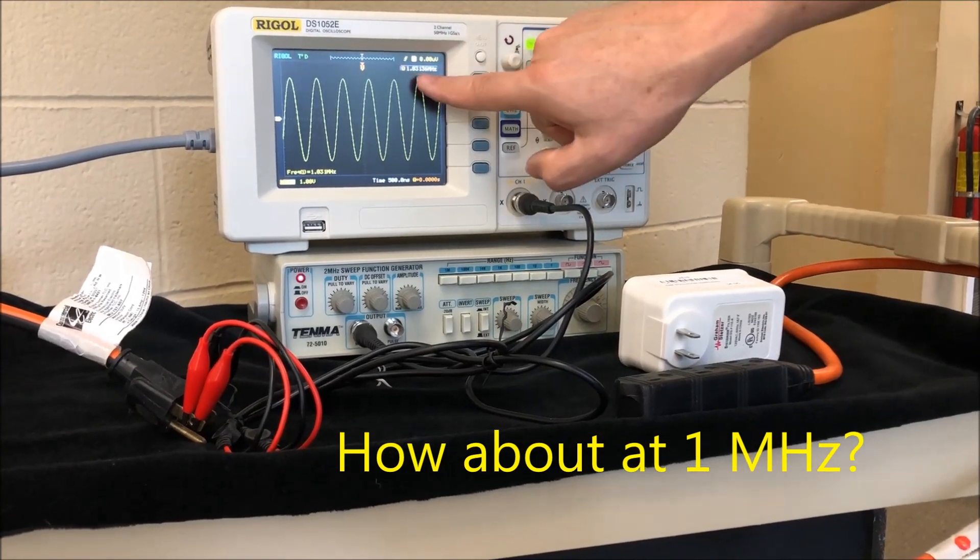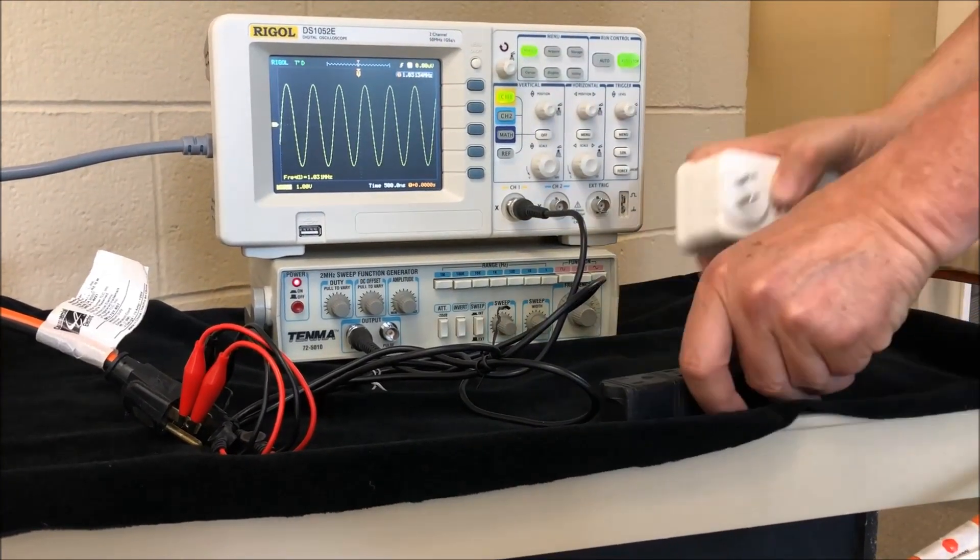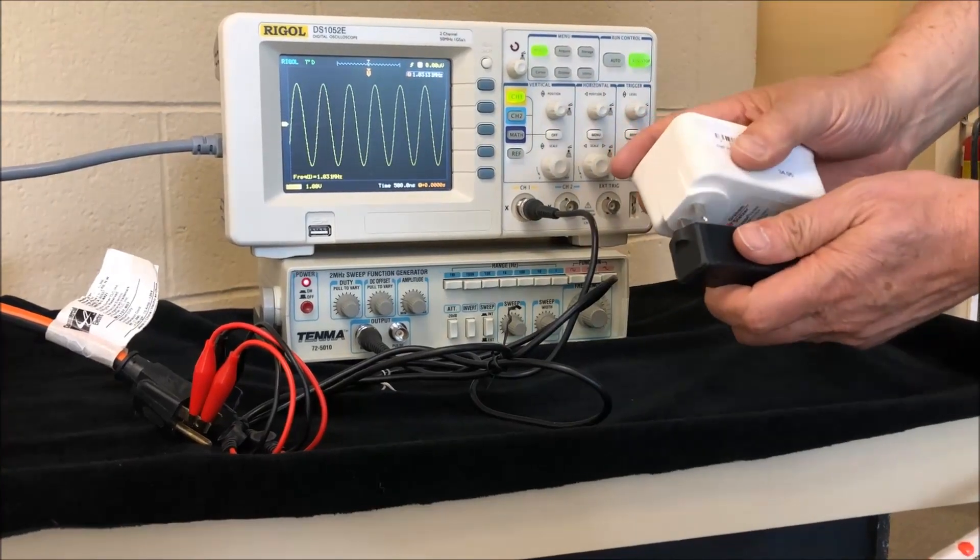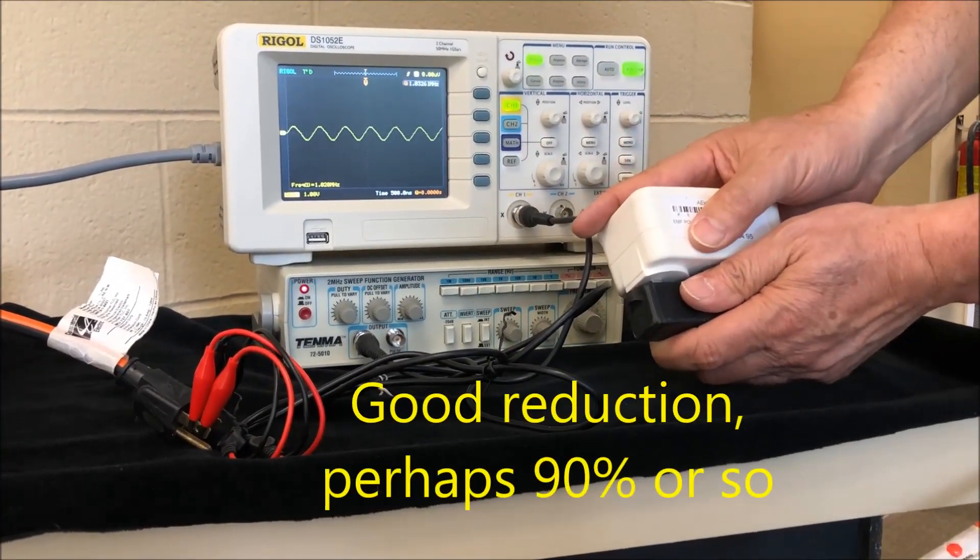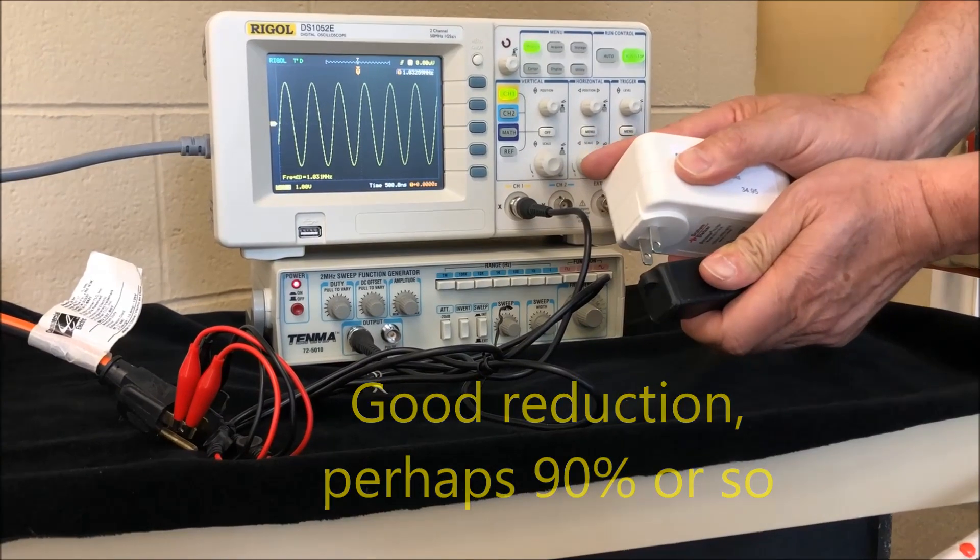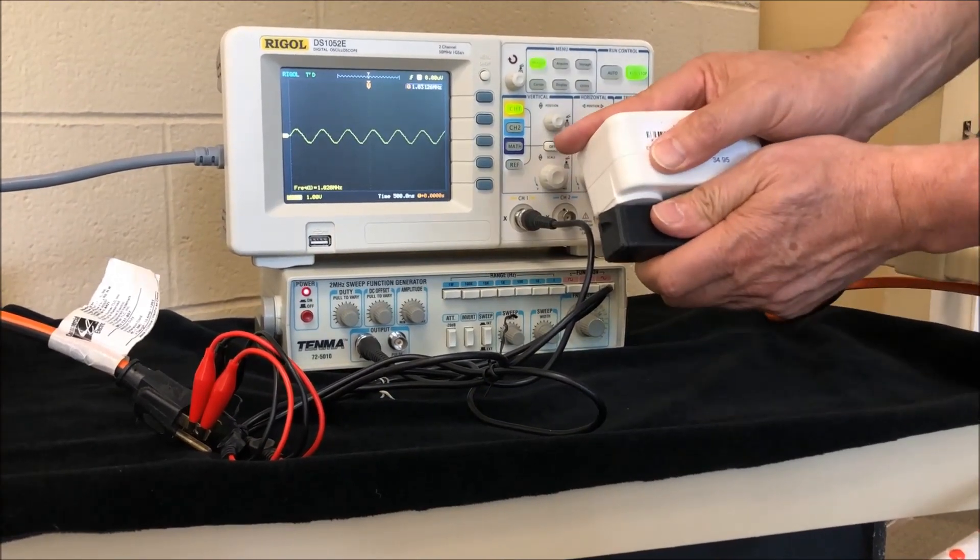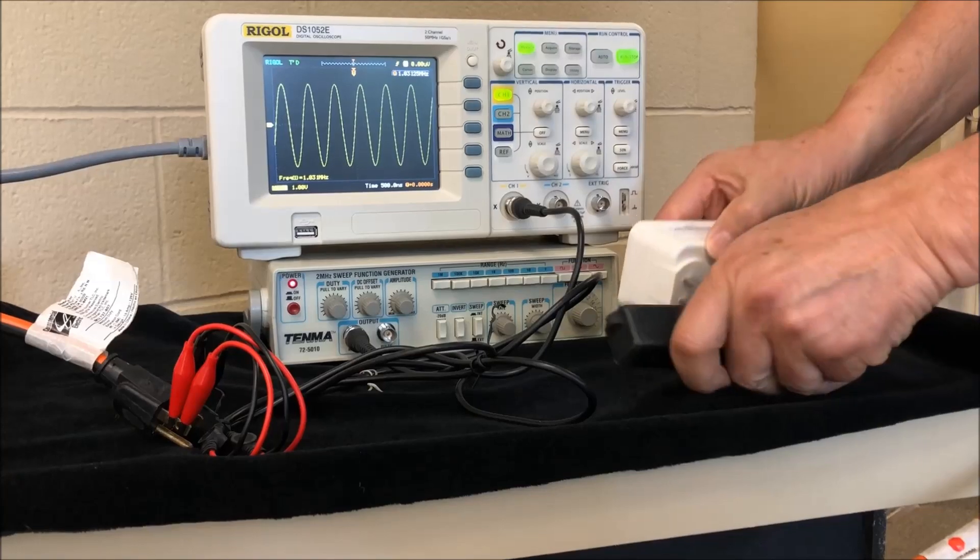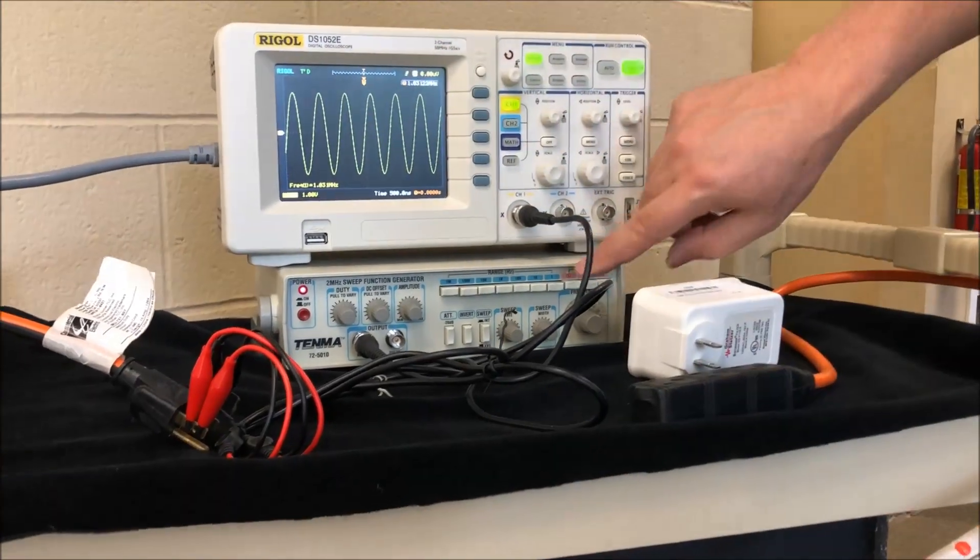Much higher frequency. Still we can see the height of the waves there. Plug in the filter and still good reduction, 90% or so. So you can see that the filters work best over a certain frequency range spanning plus or minus 100 kilohertz.